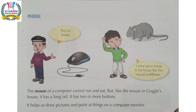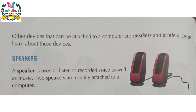Look at this picture — this is a mouse. Google is thinking: 'I once saw a mouse in my house.' But this mouse is different. The mouse of a computer cannot run or eat. But like the mouse in Google's house, it has a long tail. It has two or more buttons. It helps us draw pictures and point at things on a computer monitor.